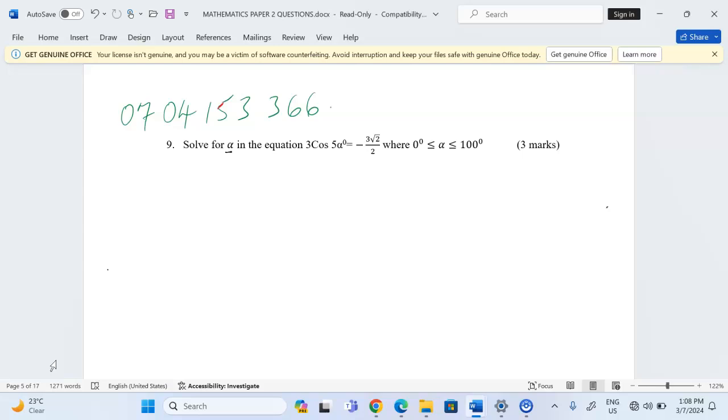So we're going to start by dividing through by 3 so that we get cos(5α) equals to... When we divide through by 3, the value of 3 here disappears and we'll get -√2/2.